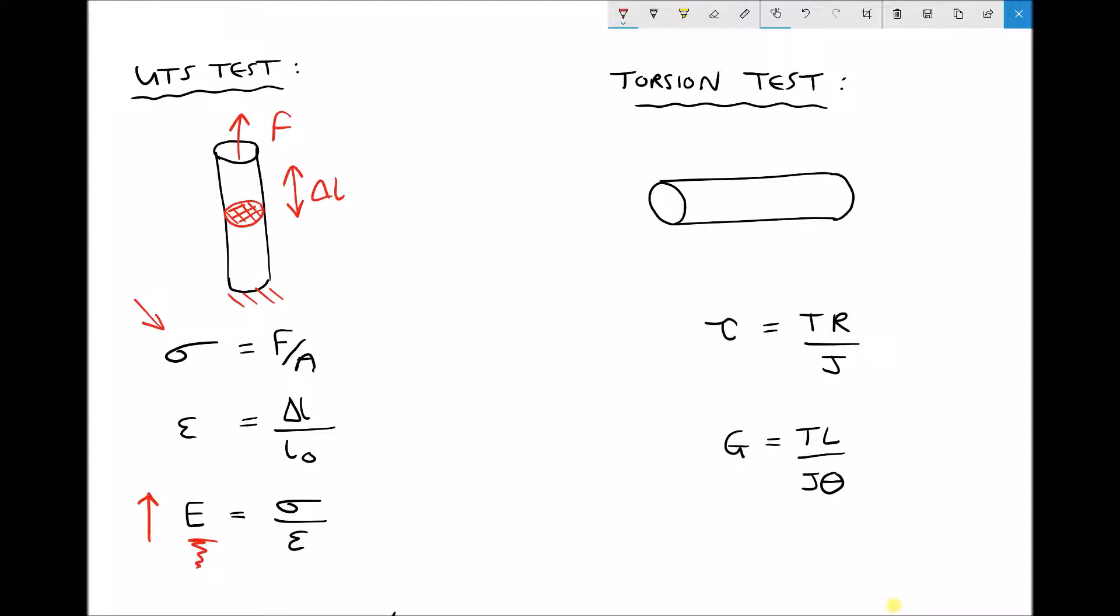So let's relate some of those points to our torsion test. A torsion test is similar in that one end of the test piece is going to be fixed. Except this time, instead of placing the test piece under a linear load, we're going to apply a turning force, which is more commonly known as a torque. As we apply that torque, the test piece is going to twist. And as with the ultimate tensile strength test, that torque is going to gradually be increased, and as we increase the torque, we would expect the deformation or deflection of the test piece to increase.